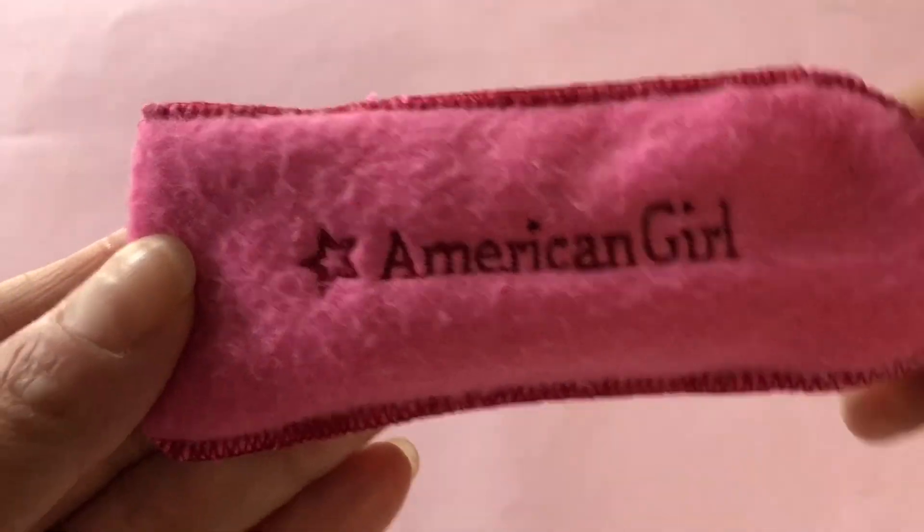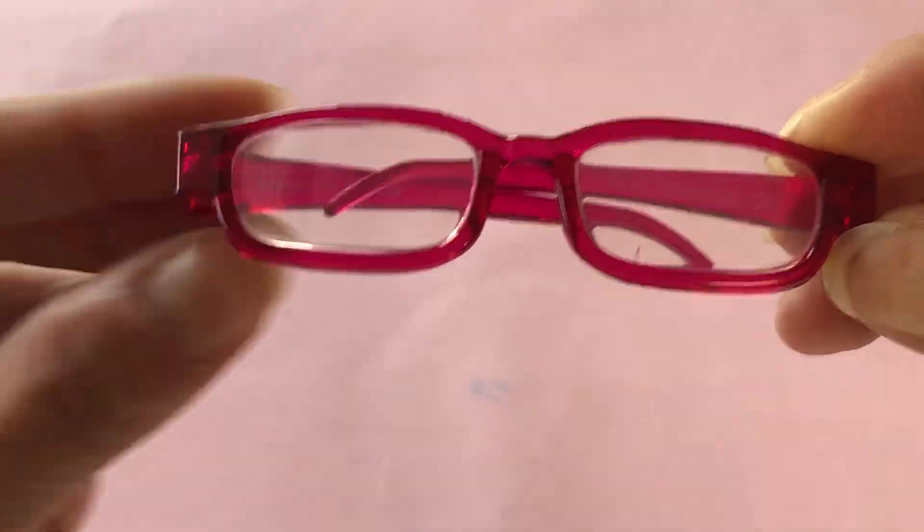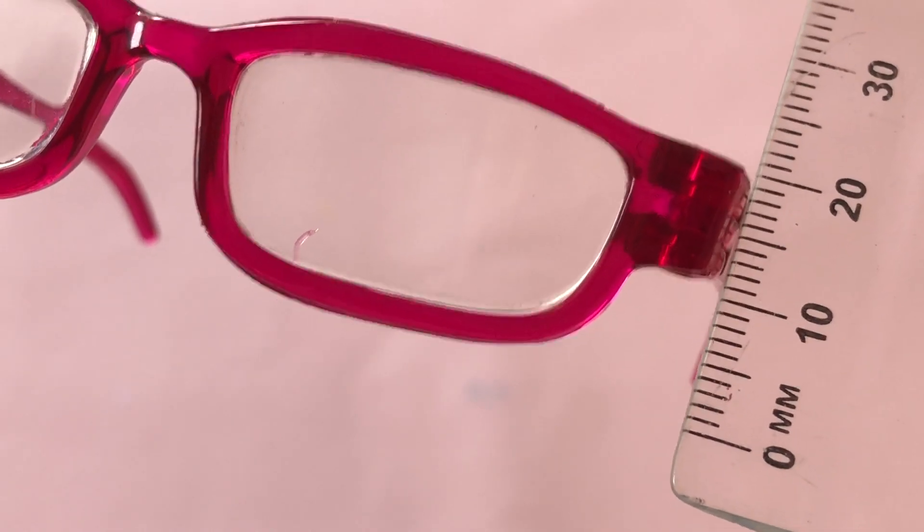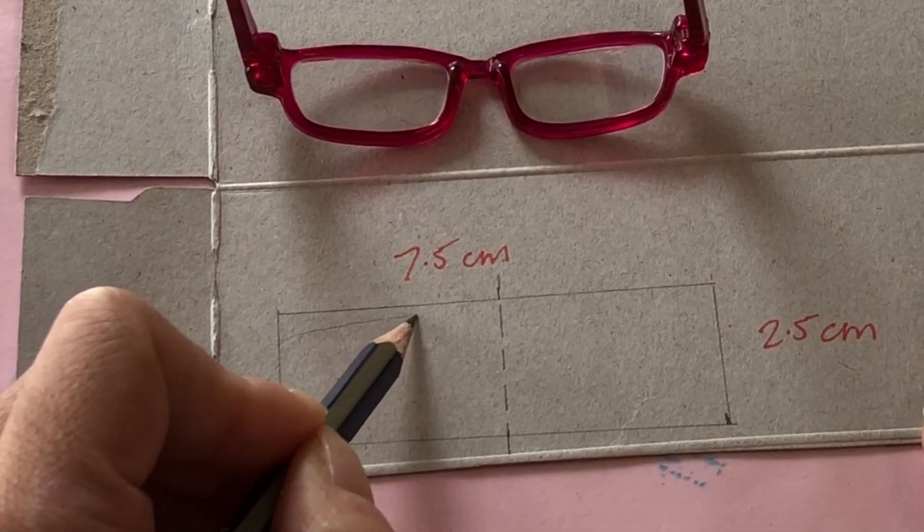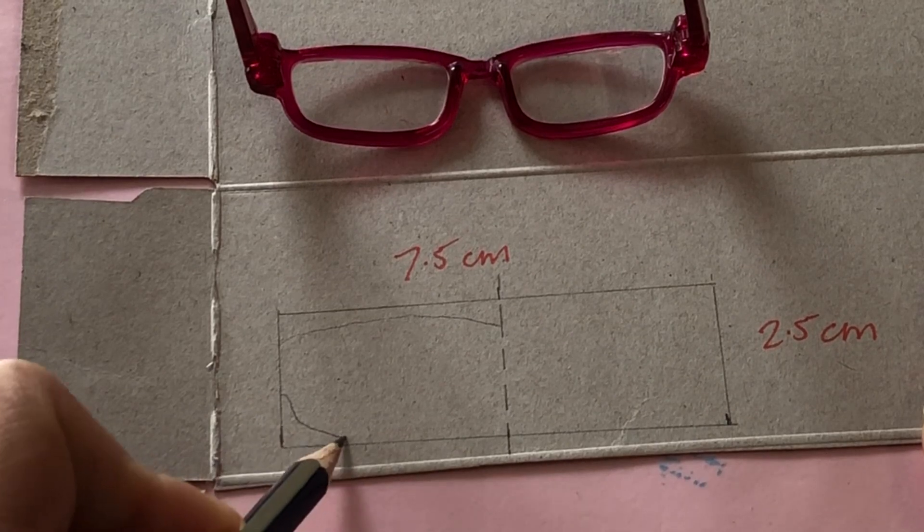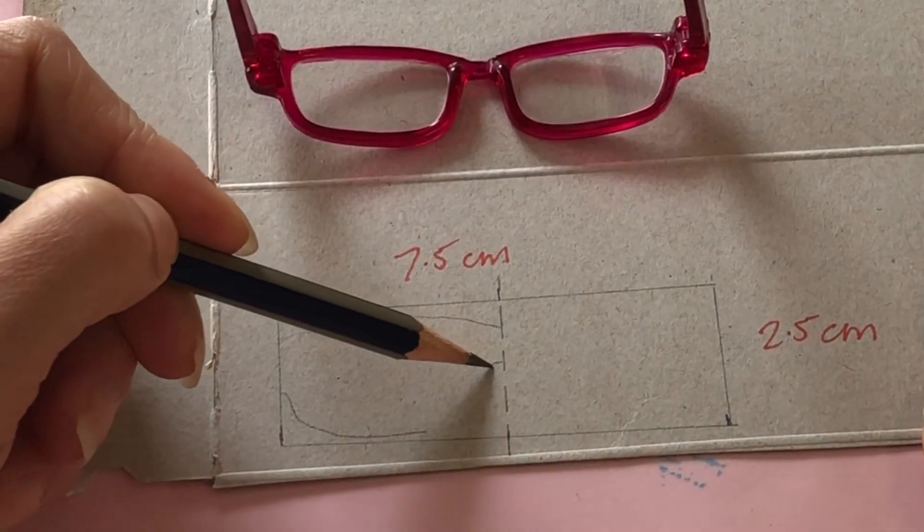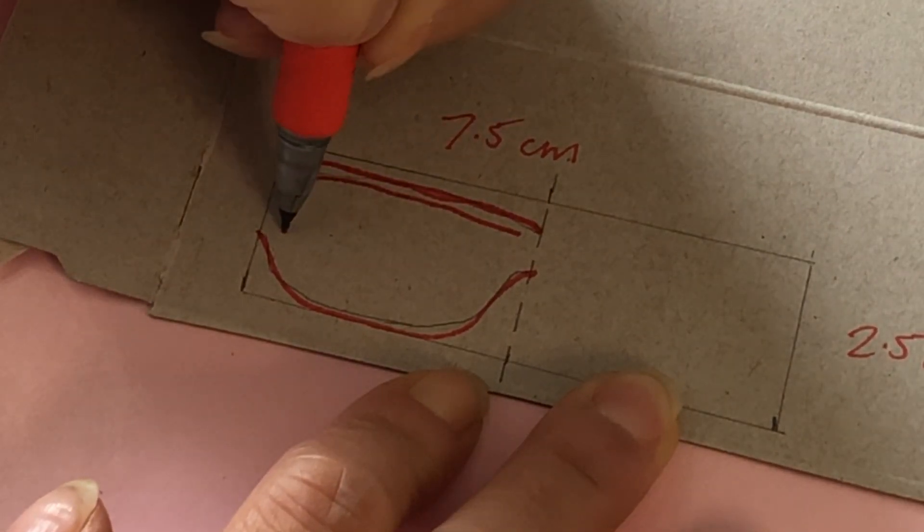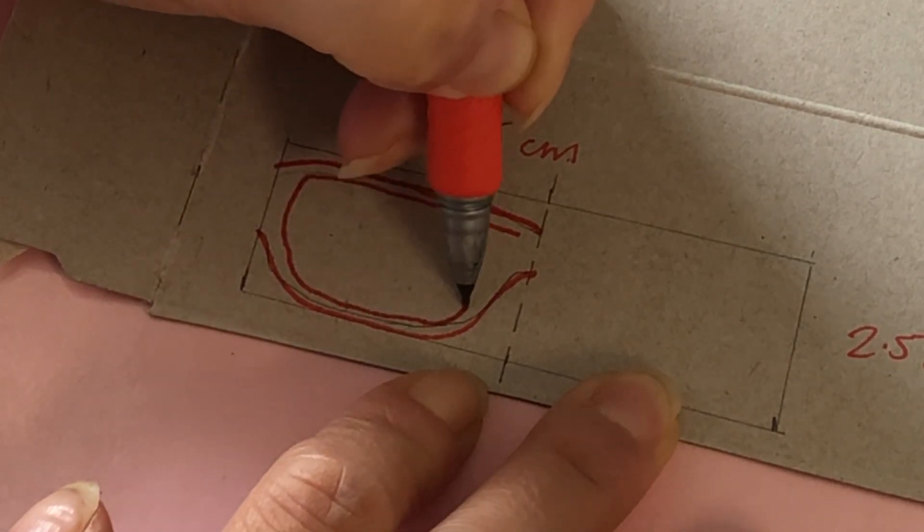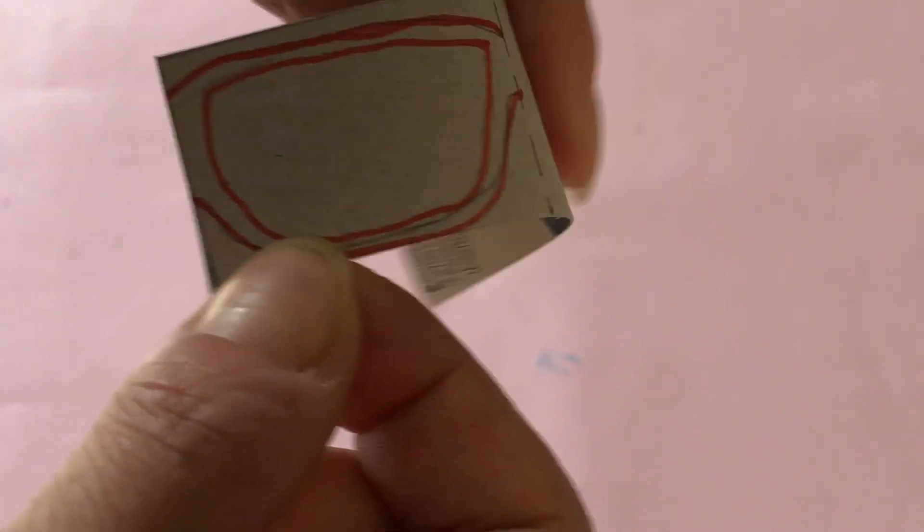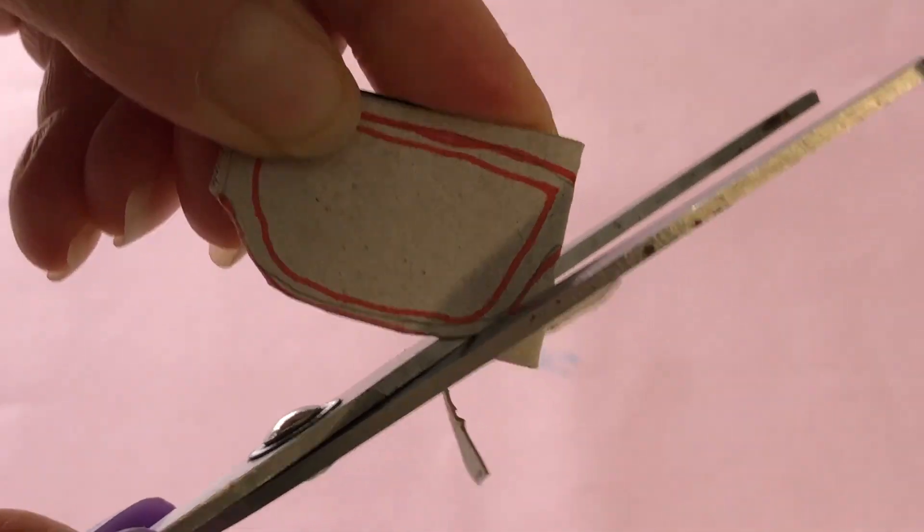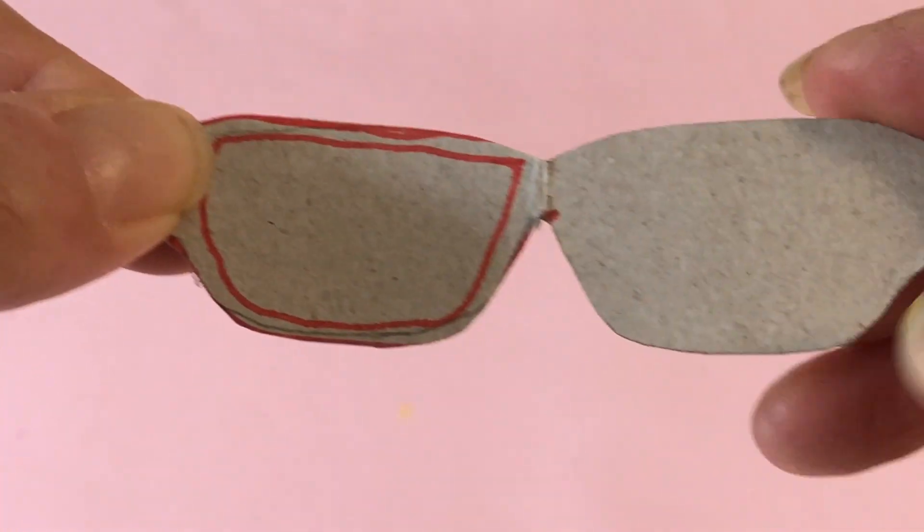To make the selfie glasses prop, we measured a pair of AG glasses from our collection. It's about 7.5 centimeters long and 2.5 centimeters high. On paperboard, draw a rectangle this size, then sketch the classic glasses shape. You only need to draw one side. Following this, draw inside the line to make the glasses frame. Fold your rectangle in half as seen on screen, then cut out to get perfectly even glasses.